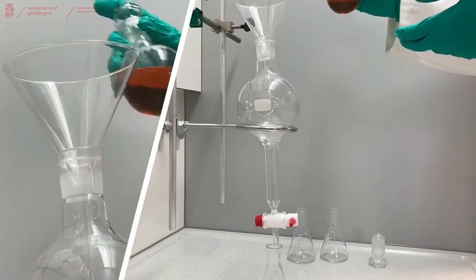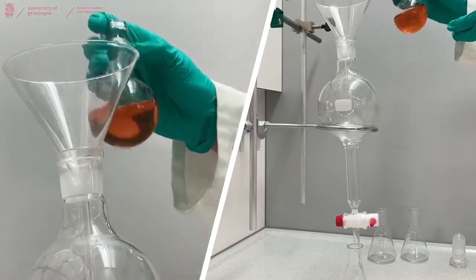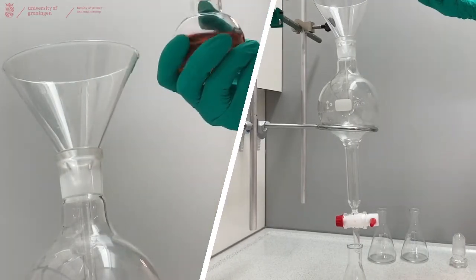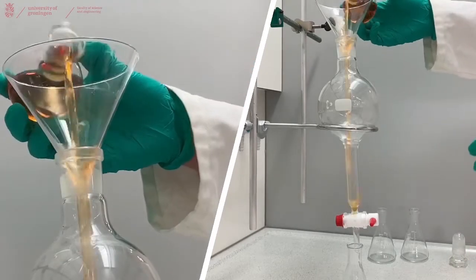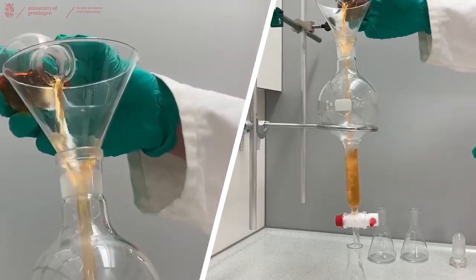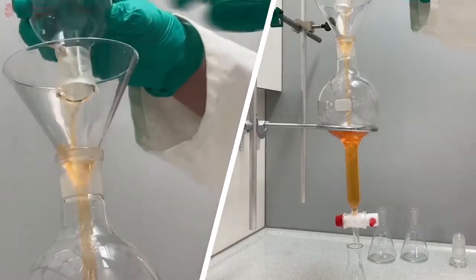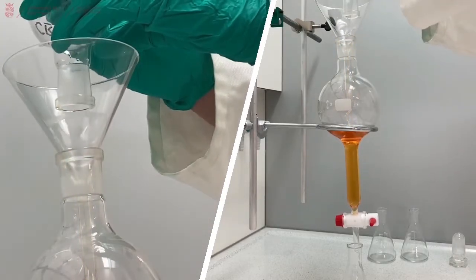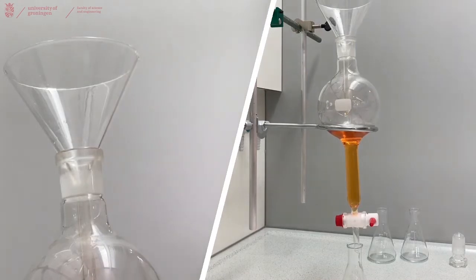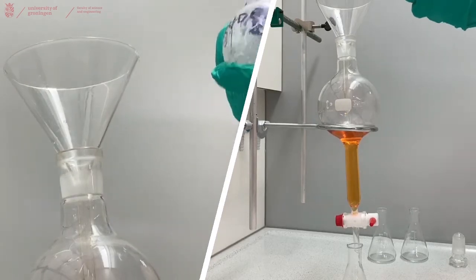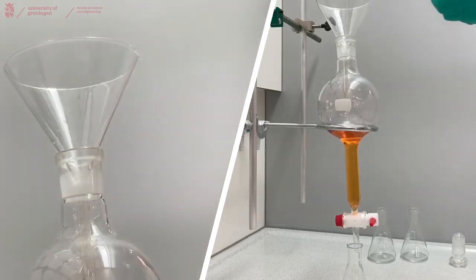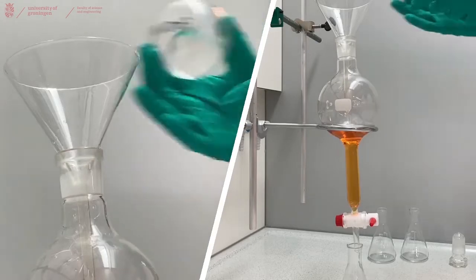When you have your crude mixture, you have to add it to the separator funnel. In this case, our crude mixture is iodine dissolved in water. Rinse your crude mixture with the same solvent used for the crude to make sure that all your product actually enters the separator funnel.